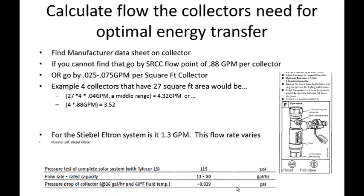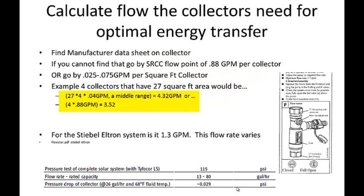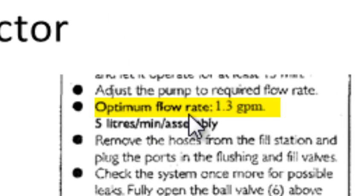Let's go to calculating the flow first. We need to know how much velocity and volume of flow to get that fluid through the collectors and back into the heat exchanger and looped again. The very first criteria is what the manufacturer data sheet states. The second thing is to determine how the SRCC flow rate compares. If I pull up the Stiebel Eltran chart from their instruction guide, utilizing their Sol 25 and Sol 27 Plus systems, they state that an optimal flow rate is going to be 1.3 gallons per minute.